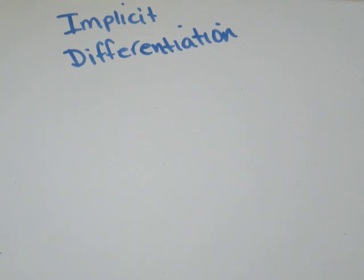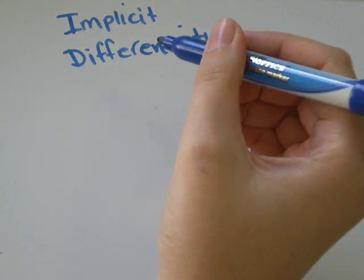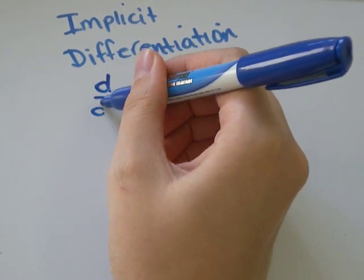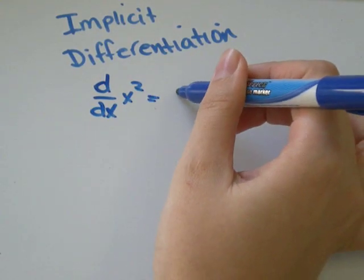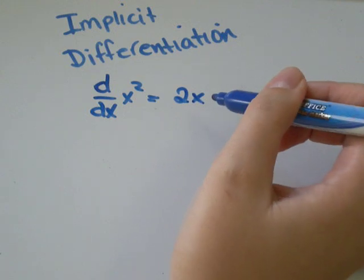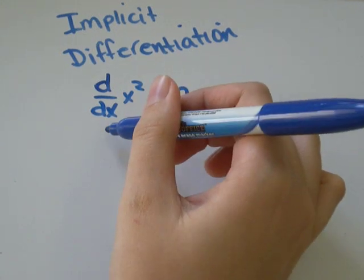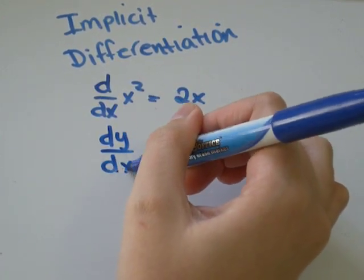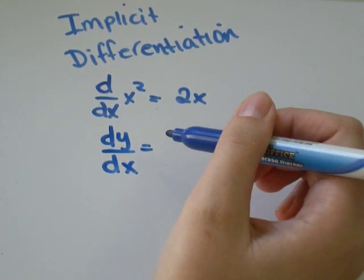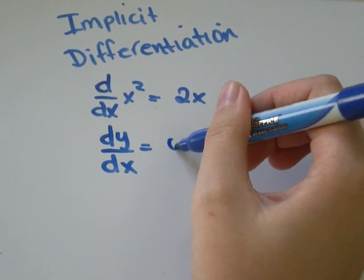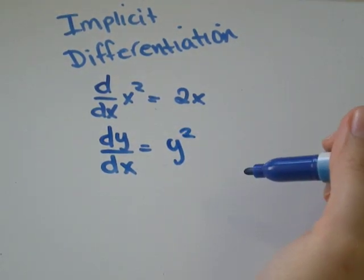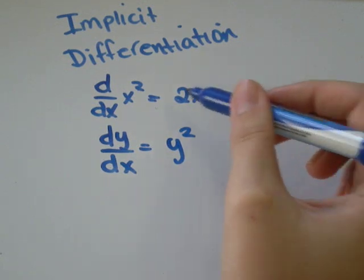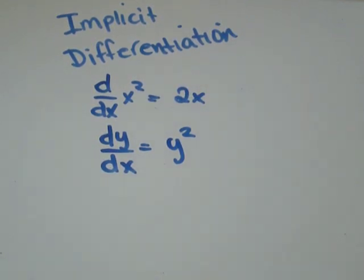And when we talk about differentiating implicitly, what we mean is, instead of something like d/dx of x², that would just be 2x, it would be differentiating with respect to a variable other than x, so maybe y. If we had y², we can't just differentiate the same way we did with x. So we're going to talk a little bit about the method in this video.